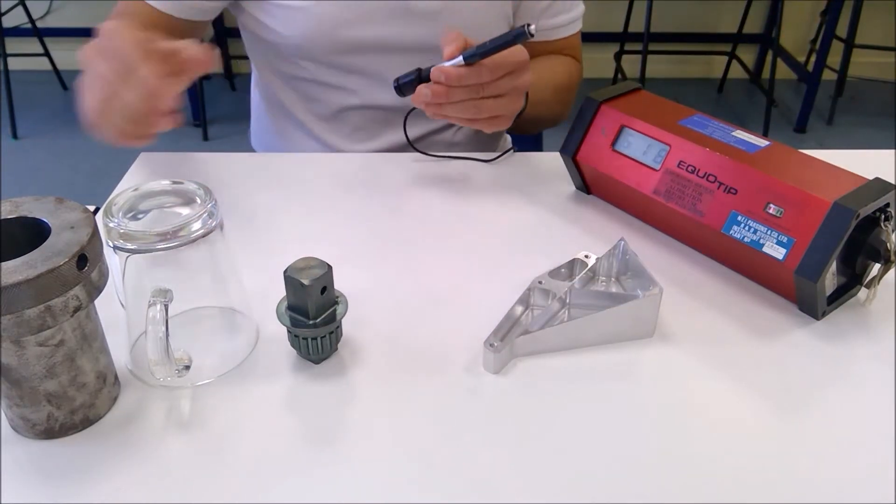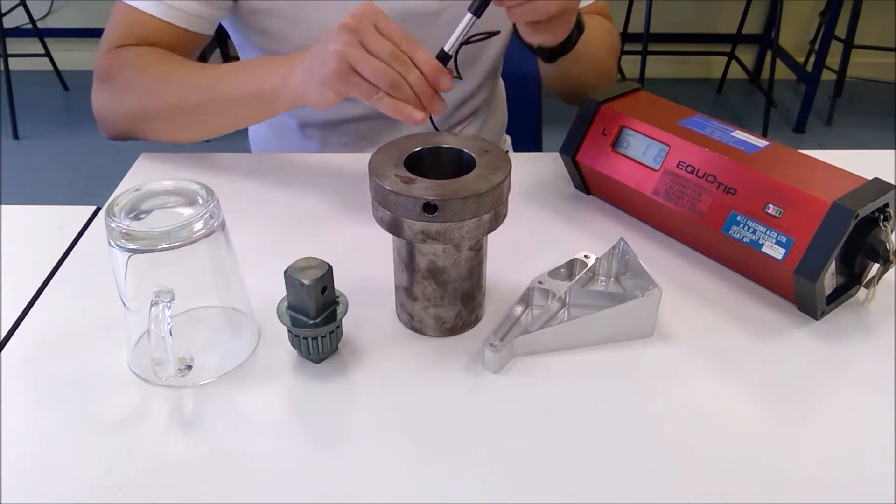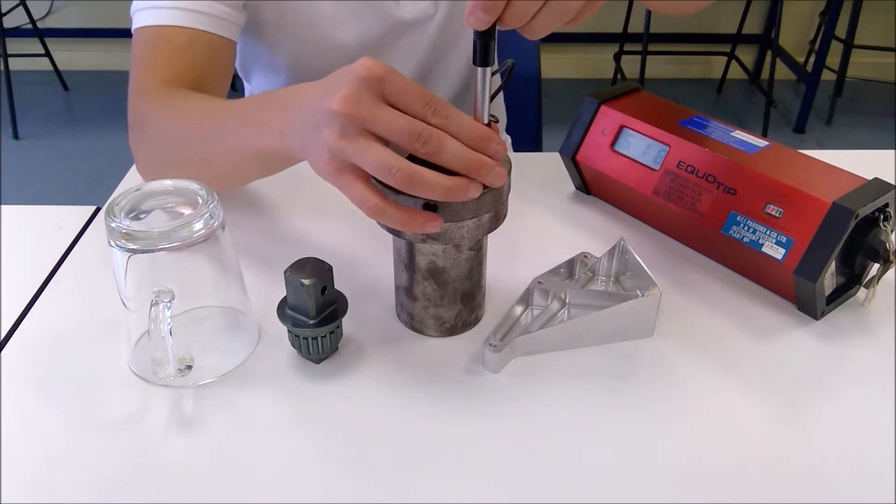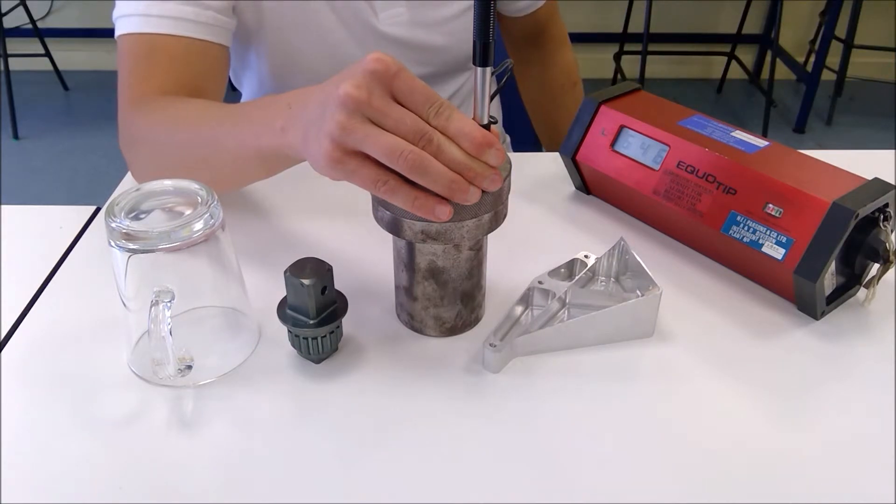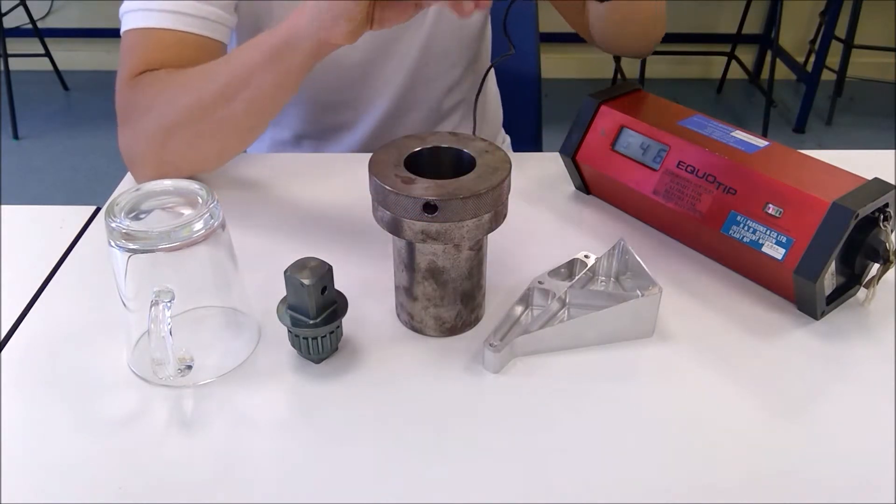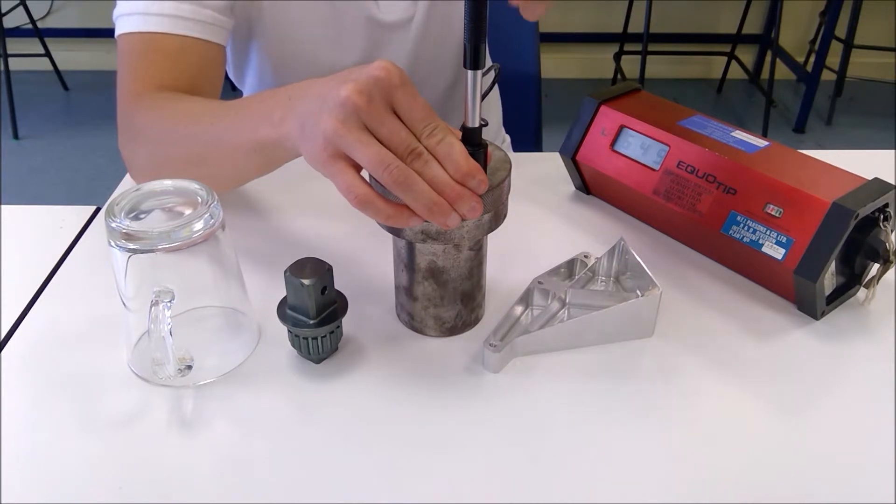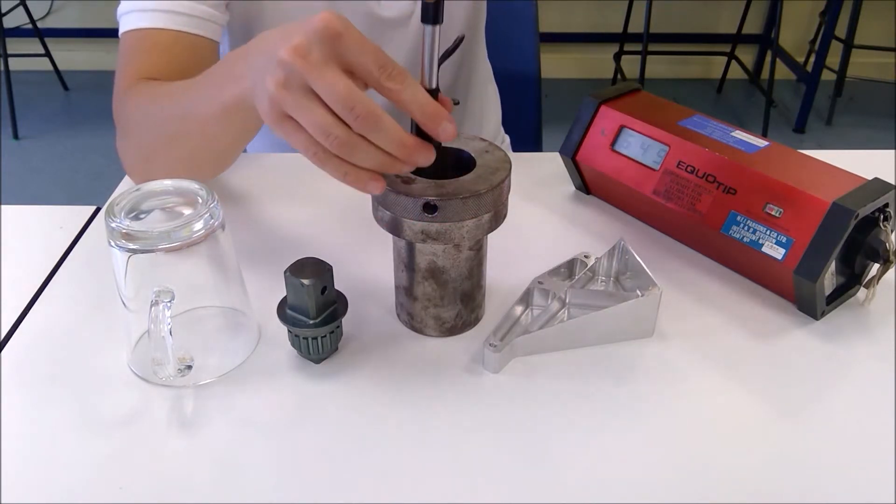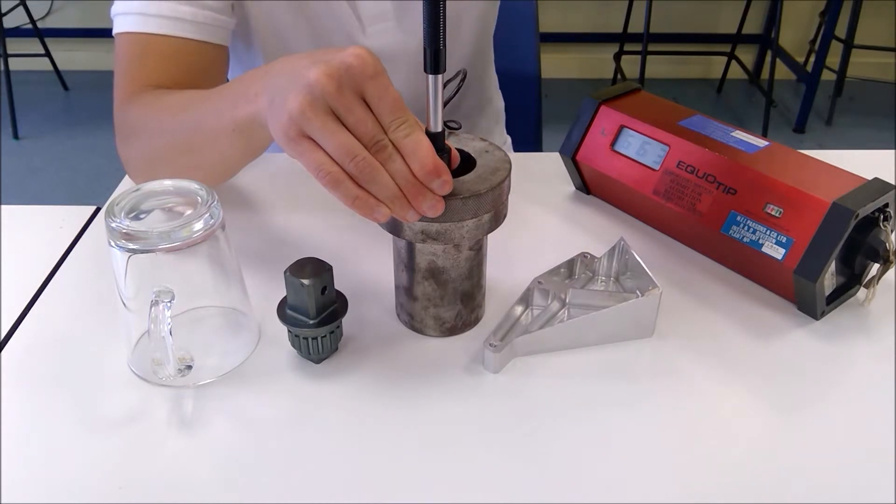Let's move on to our second material then and this time we're measuring low carbon steel. Again we retract the collar, place it flat against the surface and release the ball bearing. 646. Our second reading, 649. And our final reading, 663.